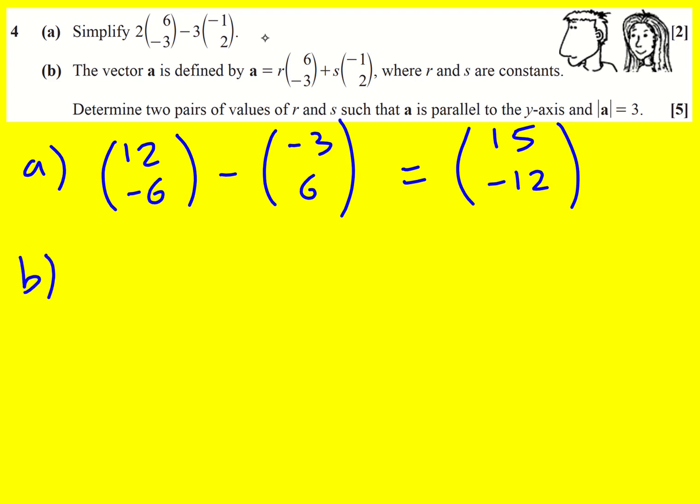For part B, we have another combination of vectors. We don't know what r and s are. We are told, however, that a is parallel to the y-axis and the modulus of a equals 3. So that means a is going to go either this way or this way.